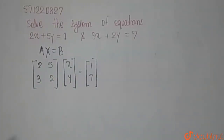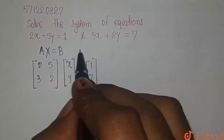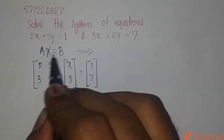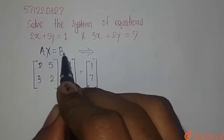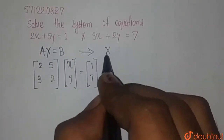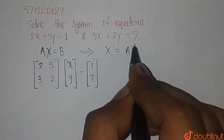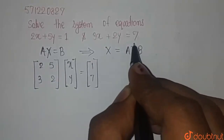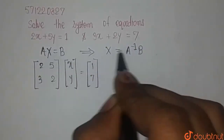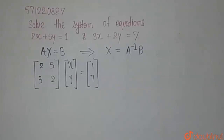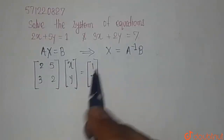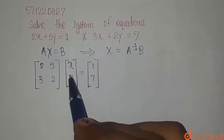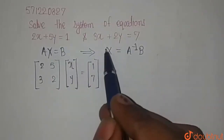And B is given as the constant column matrix 1, 7. By pre-multiplying the equation AX equals B by A inverse, we will get X equals A inverse B. To find the values of x and y, we have to find the column matrix X.